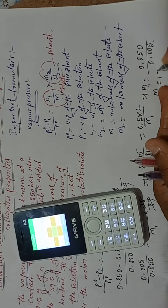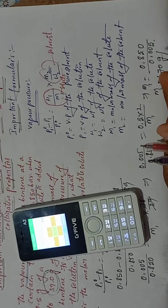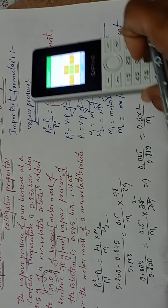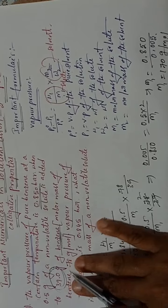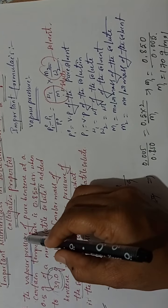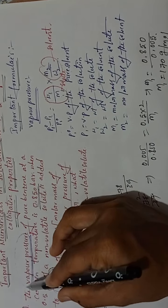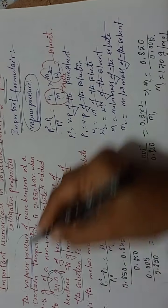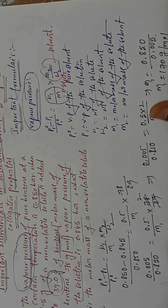Calculating 0.850 ÷ 0.005 = 170. So m1 = 170 gram per mole. That is the answer. Remember: vapor pressure word in the problem → use this formula.